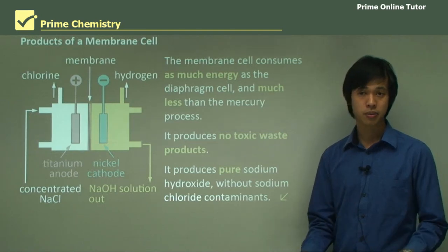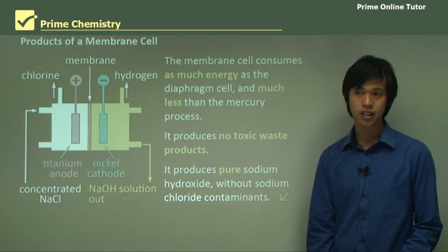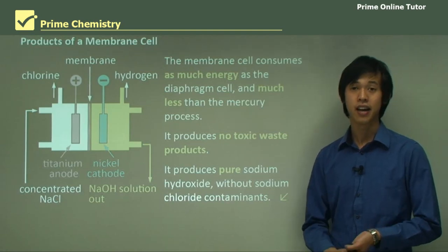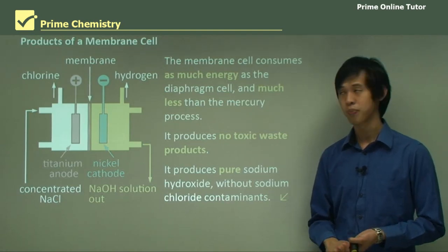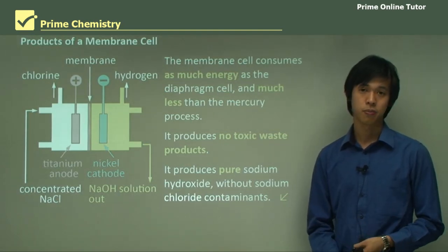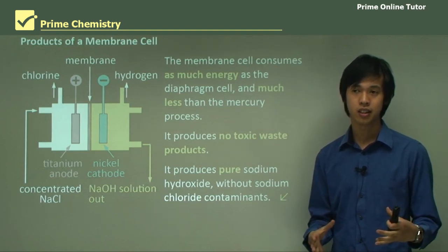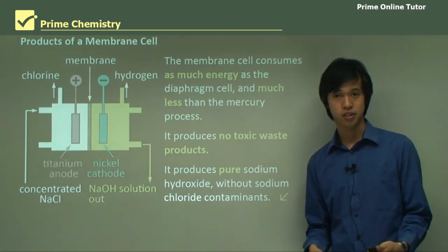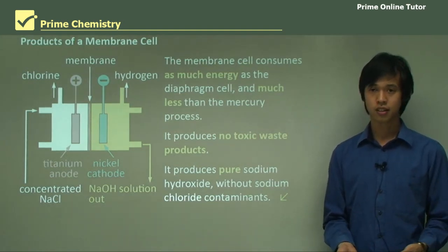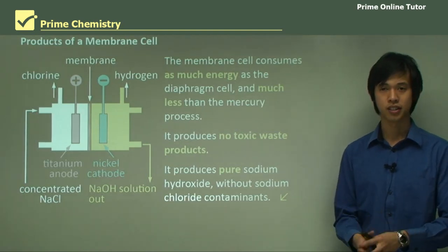That wraps up today's lesson on the industrial manufacture of sodium hydroxide. We looked at the three major processes and how they all work, and we looked at the electrochemistry of each of them. Hopefully you now understand how we produce sodium hydroxide in industry. We'll move on to the question segment and pull all this information together.